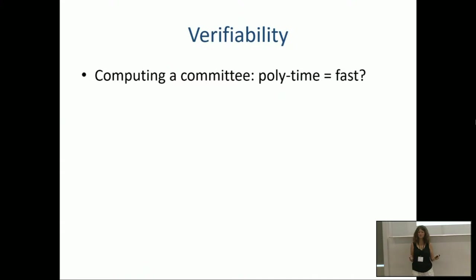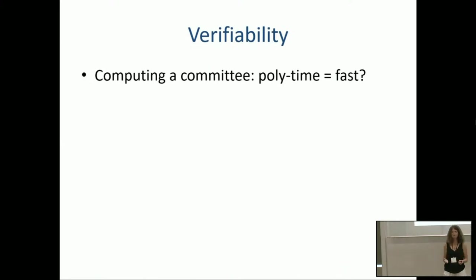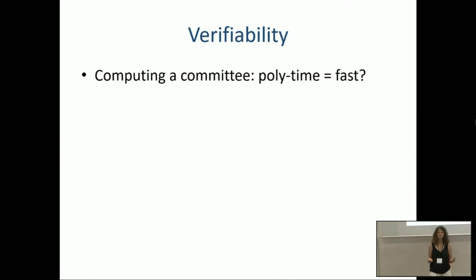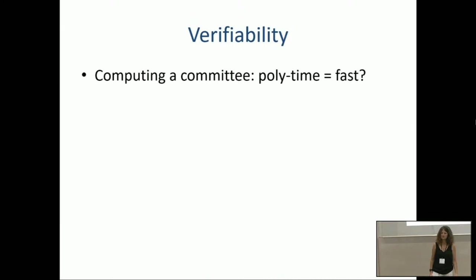Jason showed me I have 15 more minutes, so let me talk about a few more things. One application is participatory budgeting; another I mentioned was blockchain. Something important in blockchain is verifiability. For blockchain people doing validator elections, polynomial time isn't fast enough — they really want linear or nearly linear time since this happens frequently and requires a time-sensitive response. An idea: outsource the computation to a potentially untrusted party to elect the committee off-chain, then on-chain verify that this committee satisfies the desired axioms. The hope is that verification is easier than computation.